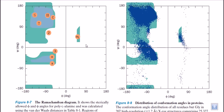Let us talk about the Ramachandran plot and its importance in determining the conformation of protein and protein structure. What we know about protein structure is that the protein backbone is pretty much stable in nature because of the peptide bonds and the presence of the partial double bond character. But except for the peptide bonds, there are other bonds between C-alpha, C, and also the bond between N and C-alpha of the peptide, and these bonds have freedom for rotation.